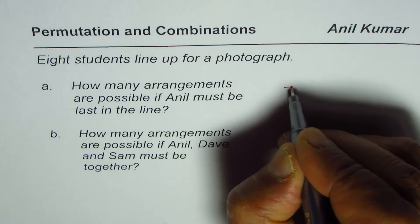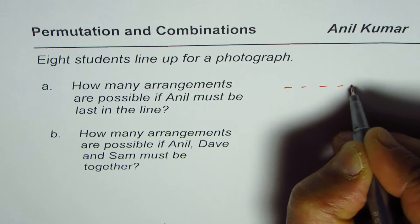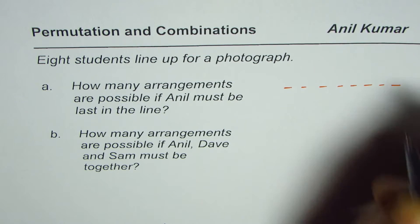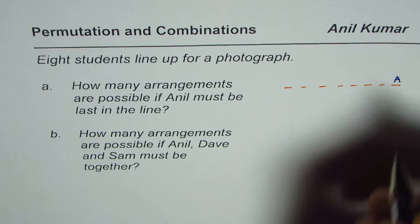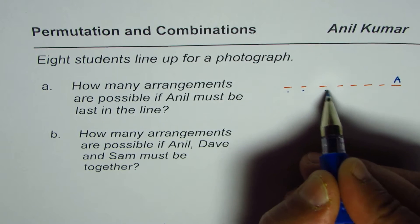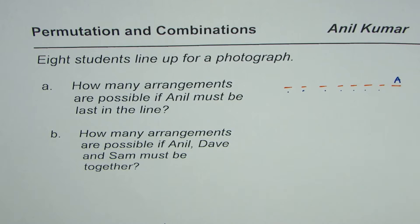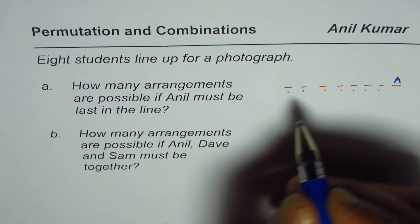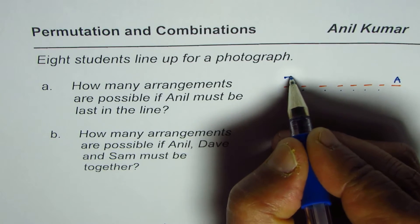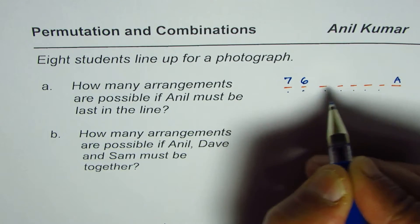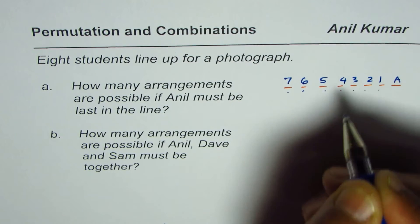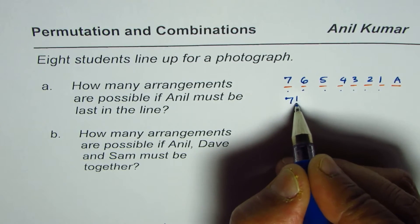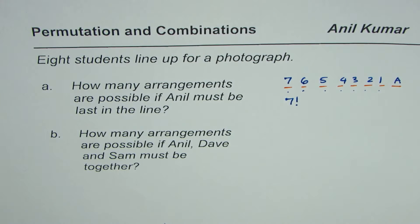We have eight positions. If one position is already filled by Anil, we are left with seven positions. To fill these seven positions, seven could fill the first, six the next, then five, four, three, two, and one. So the answer is seven factorial — that is the answer for this part.